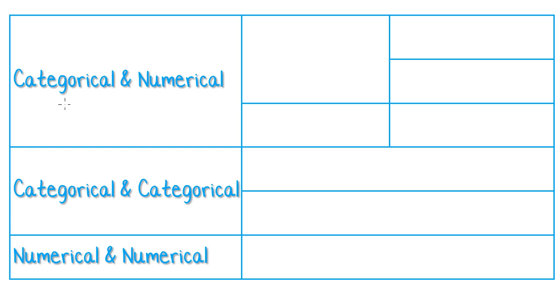So when we had categorical data, so something categorical and something numerical as our two variables that we were comparing. When we had two categories, so for example, male, female.